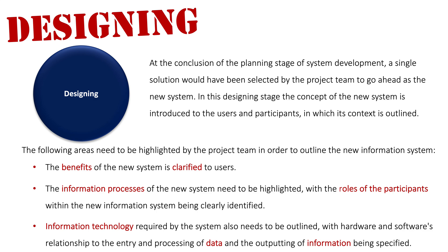Third, the information technology of the system needs to be outlined — specifically how hardware and software relate to the entry, processing, and output of data. This includes whether the new technology is compatible with what the organization already has, whether there will be a complete overhaul, and whether users will need training. If users push back, the project team must justify the decision by referring back to the feasibility studies and requirements report from the planning stage.